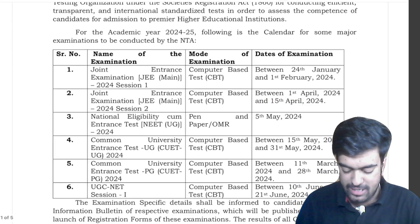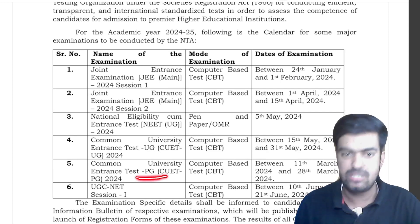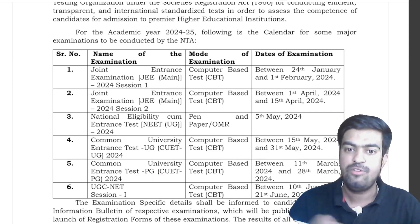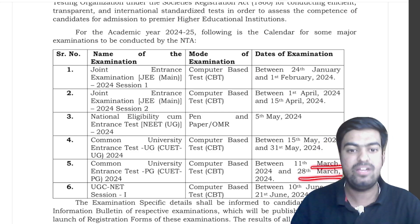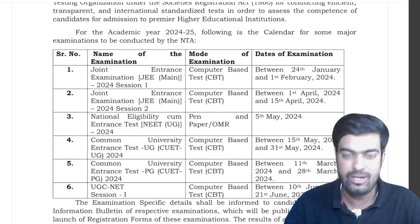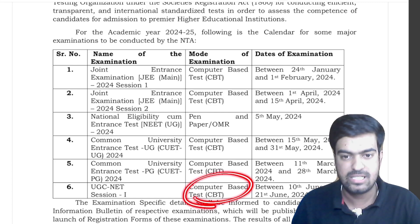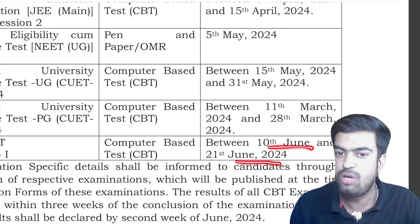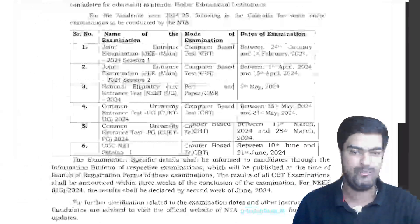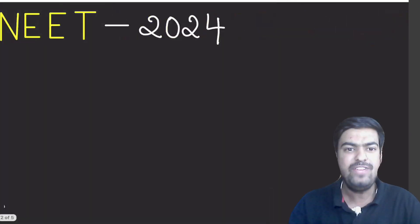Next, for PG1, the CUET PG, for students who want to do PG, the dates are 11th March and 28th March. Then we have UGC NET Session 1, which is also computer based test, and this is going to happen between 10th of June to 21st of June, which is 2024.